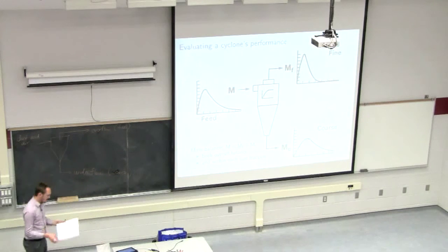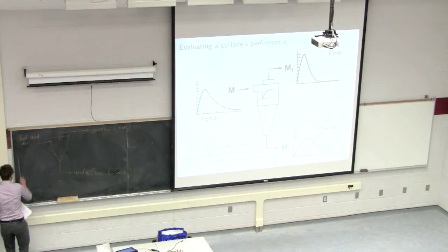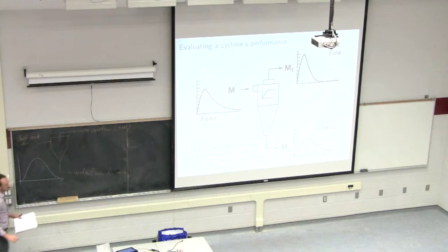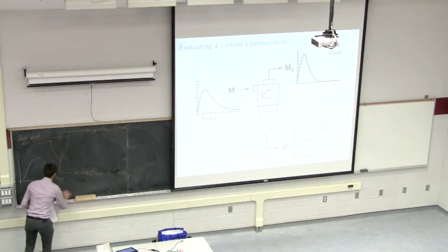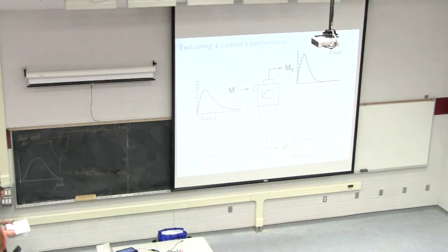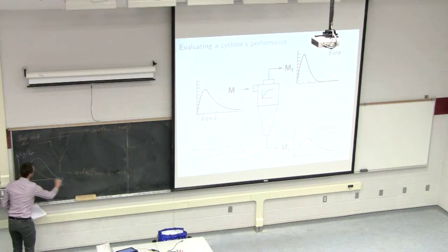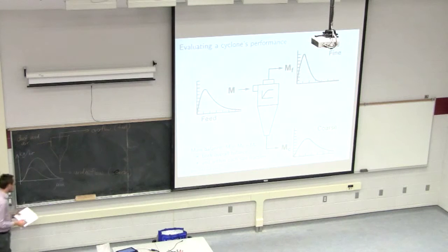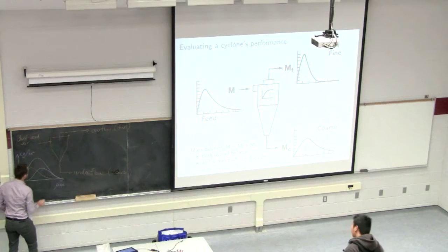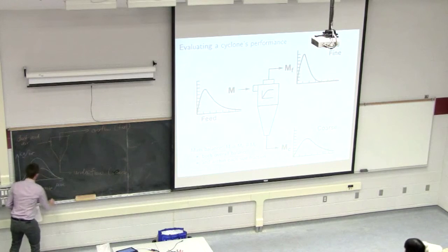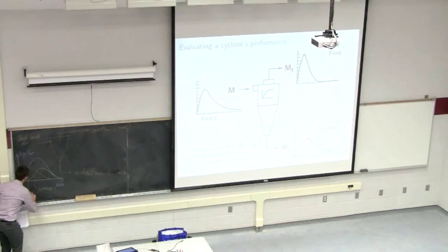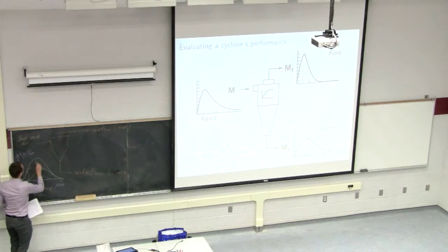A better representation is to superimpose the distributions. If my feed coming in has a distribution that's fairly normally distributed, with the horizontal axis plotting particle size in microns — average diameter in microns — and the vertical axis is mass flow rate in kilograms per hour, then blue is my feed. My underflow distribution — the coarser, heavier particles — would be in yellow, and my overflow fines would be in orange.